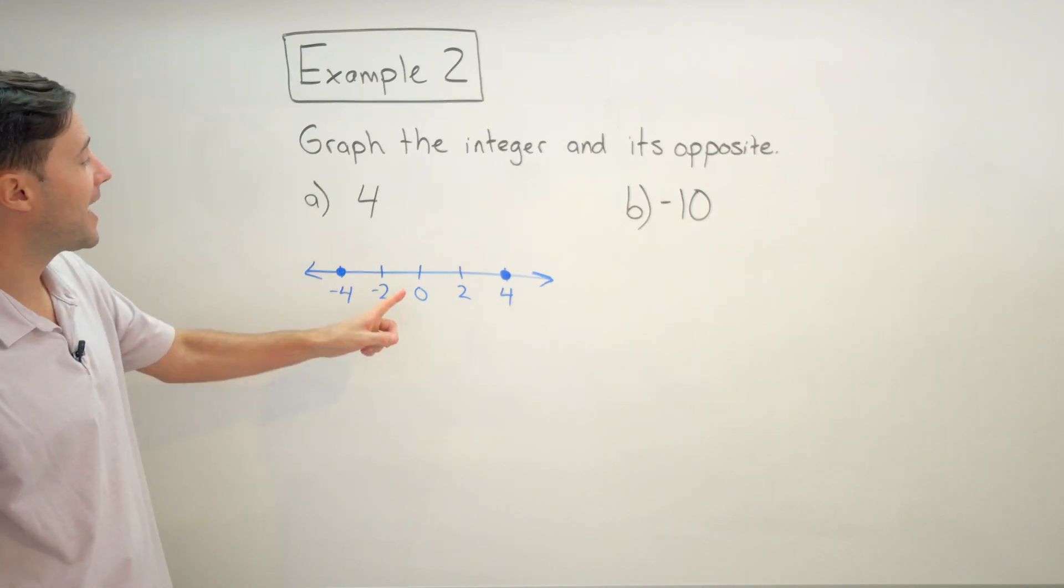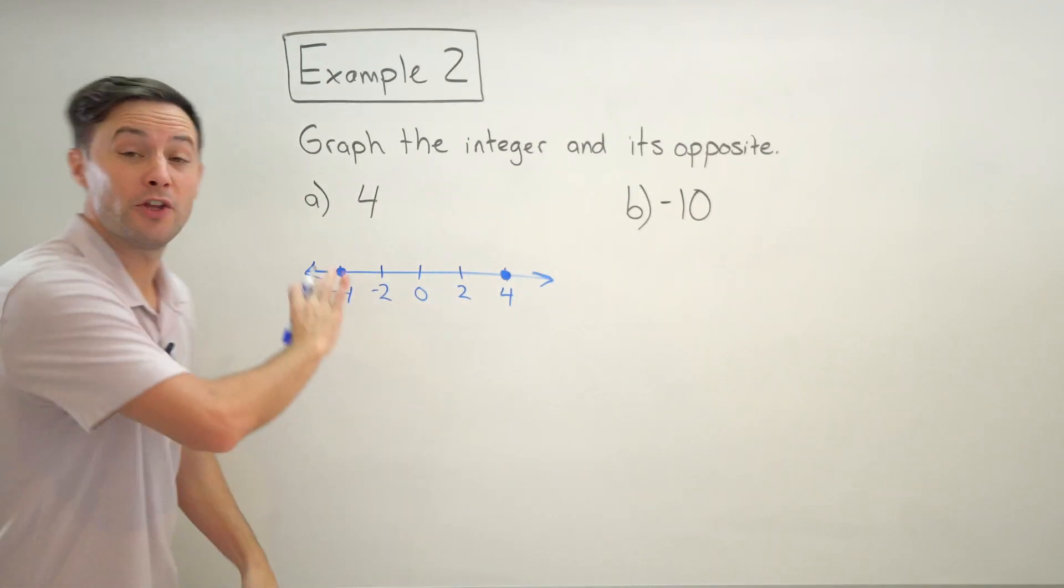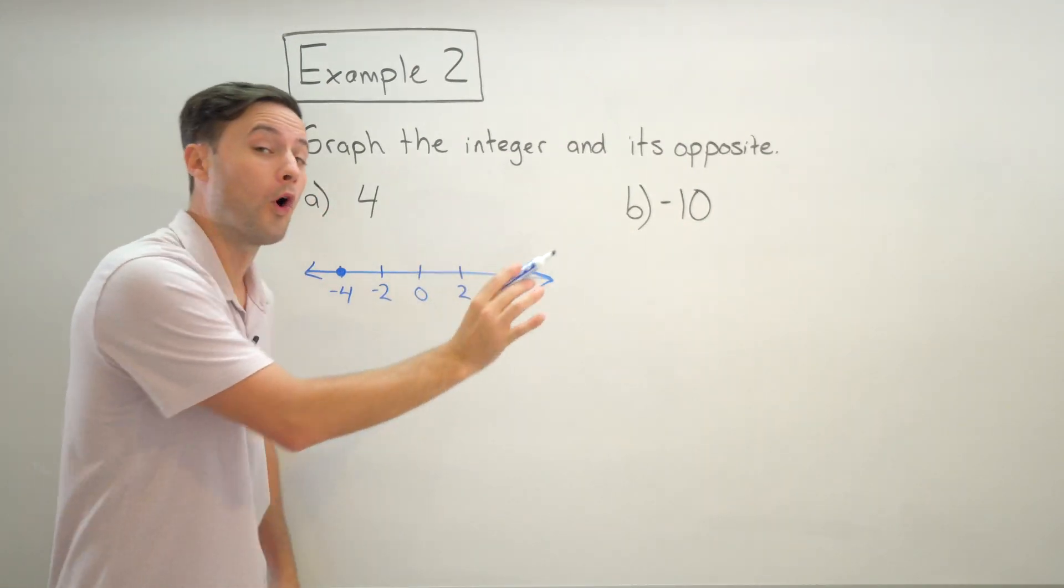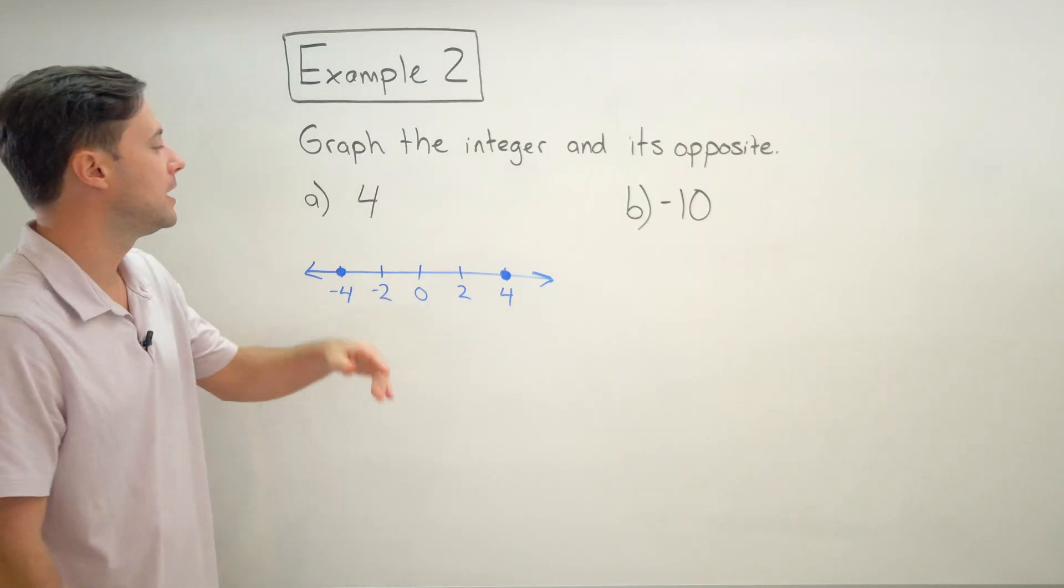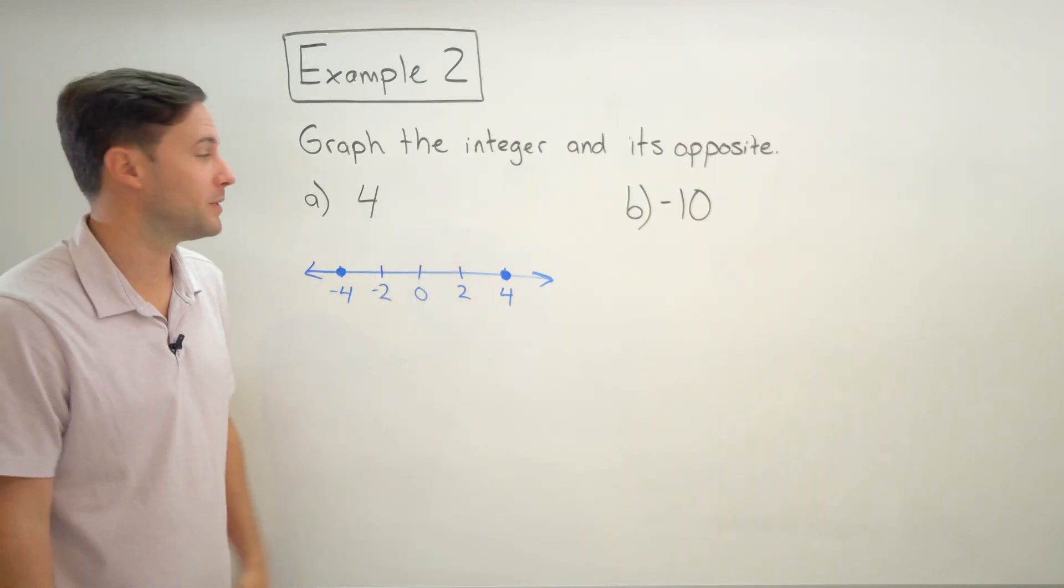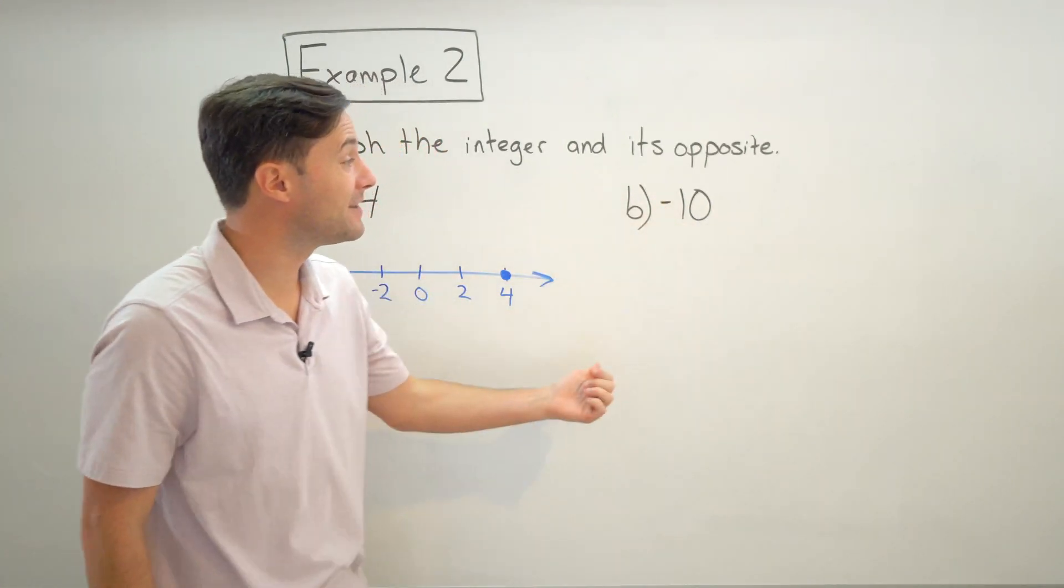So that is what graphing four and its opposite should look like. Now you may have done it different - you could have counted by ones and that's totally fine, or counted by fours, that's totally fine too. I decided to count by twos, no big deal. All right, let's look at b. So now we got to graph negative 10 and its opposite, which would be 10.